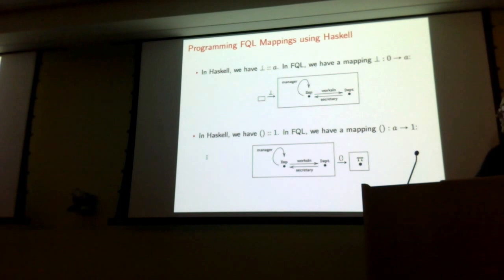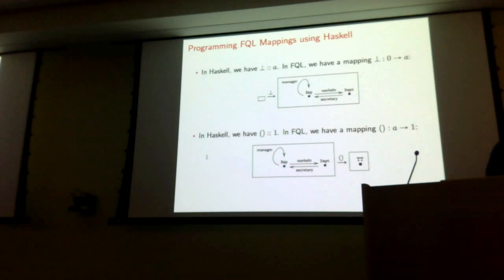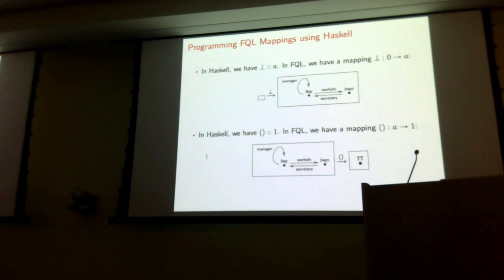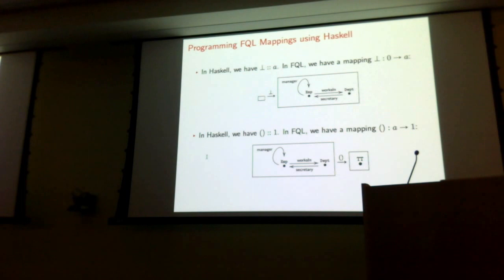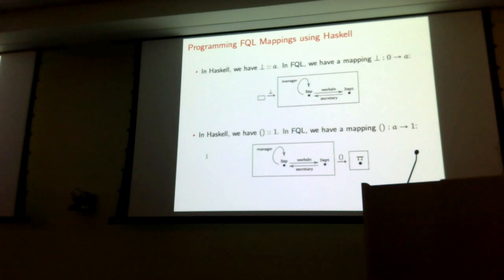Now I'm going to describe how, given a term in the simply typed lambda calculus, you get a mapping between schemas in FQL. It's these operations that are going to respect the equational theory of the simply typed lambda calculus. In Haskell, given an element of the empty type you can create an element of an arbitrary type — that's bottom. In FQL, if you have an empty schema you can construct a mapping from it to any other schema. The more appropriate Haskell analog is the absurd function from the void package, which takes Void to any type A.